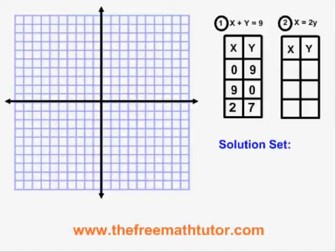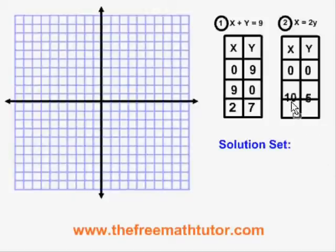For the second equation, x equals 2y: if x equals 0, y must be equal to 0. If x is equal to 10, y must be equal to 5. And if x is equal to 4, y must be equal to negative 2.